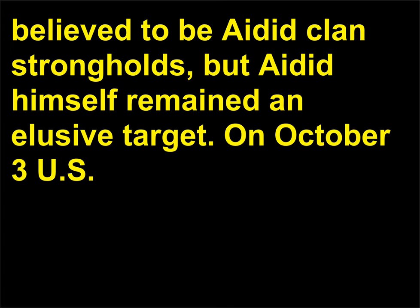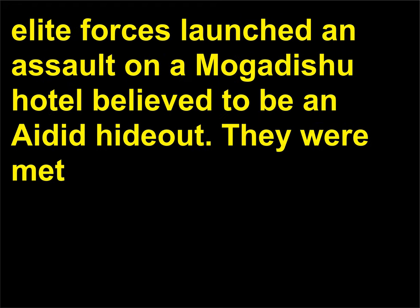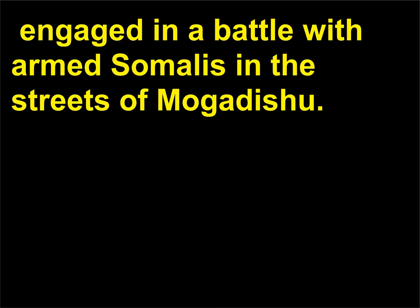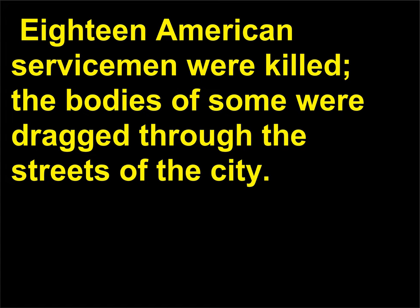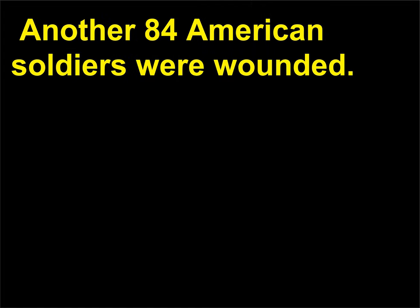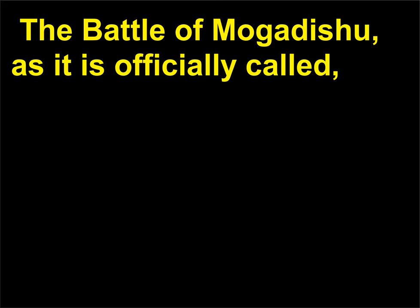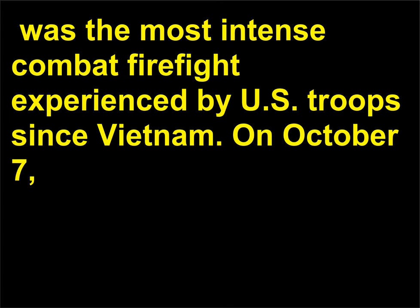On October 3, U.S. elite forces launched an assault on a Mogadishu hotel believed to be an Aidid hideout. They were met with an ambush. Over the following 17 hours, U.S. troops — including a military mission to rescue downed Black Hawk helicopter crews — engaged in a battle with armed Somalis in the streets of Mogadishu. 18 American servicemen were killed; the bodies of some were dragged through the streets of the city. Another 84 American soldiers were wounded. Hundreds of Somalis were killed in the fighting. Video footage of the chaos was shown on international television. The Battle of Mogadishu, as it is officially called, was the most intense combat firefight experienced by U.S. troops since Vietnam.